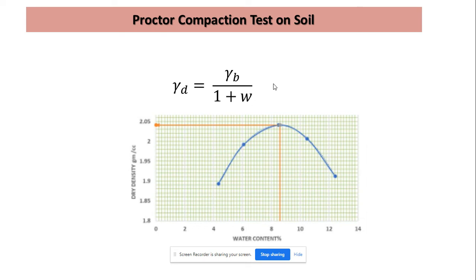After determining the bulk density of soil, we will take a representative sample from the compacted soil and put it in an oven to determine the water content. Once the water content is determined, we can use the formula for dry density: γd = γb / (1 + w).